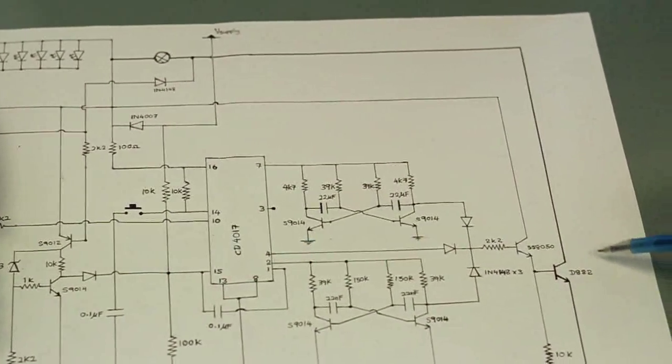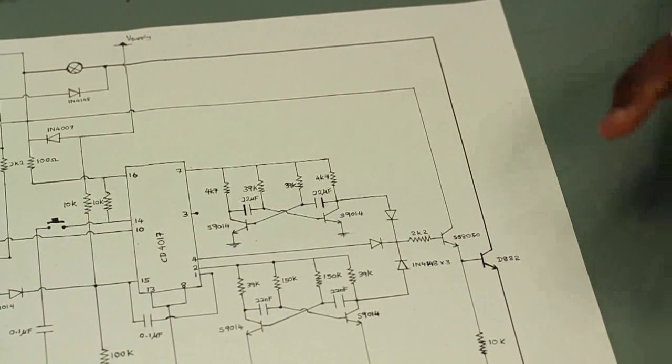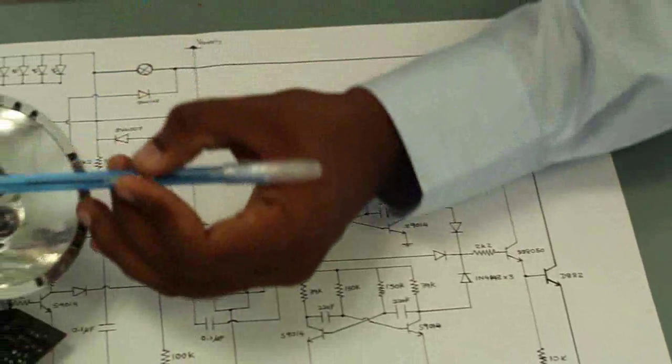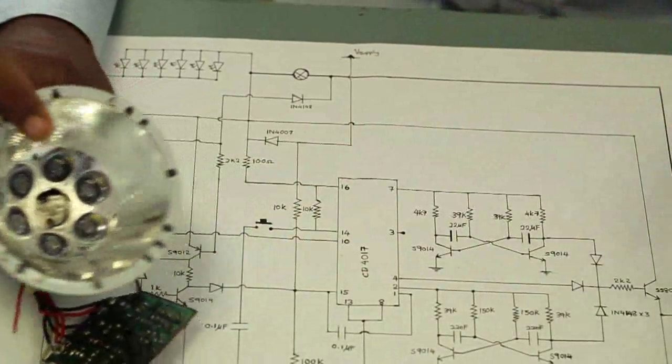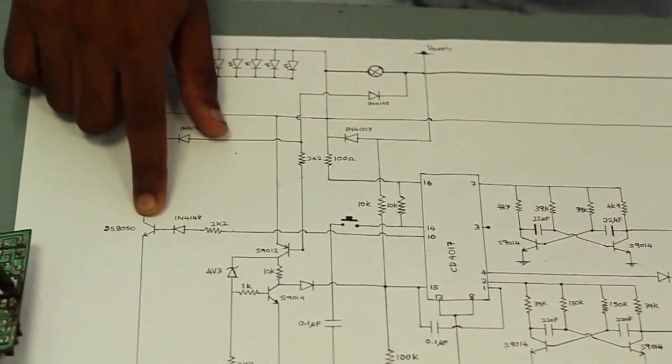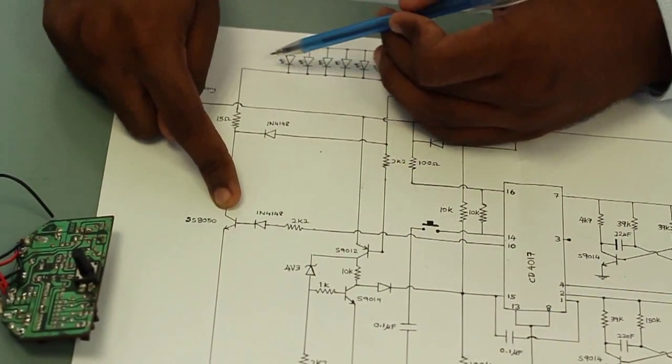This high power transistor, which can draw a lot of current, is connected to the halogen bulb. This transistor here is connected to the 6 LEDs.